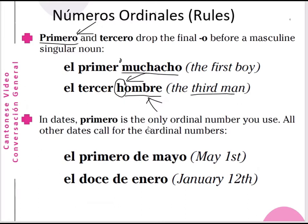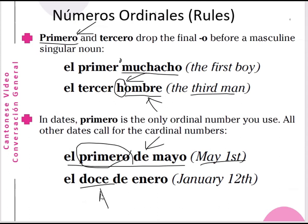When telling dates, primero is the only ordinal number used — all other days use the cardinal number. For example, 'the first of May' is 'el primero de mayo.' And 'the 12th of January' is 'el doce de enero' — doce is the cardinal number, not the ordinal. In English we say 'the 12th' as an ordinal, but in Spanish we use the cardinal number. So: el doce de enero; and for the 1st of May, el primero de mayo — not el uno de mayo. Only the first day of the month uses the ordinal number.